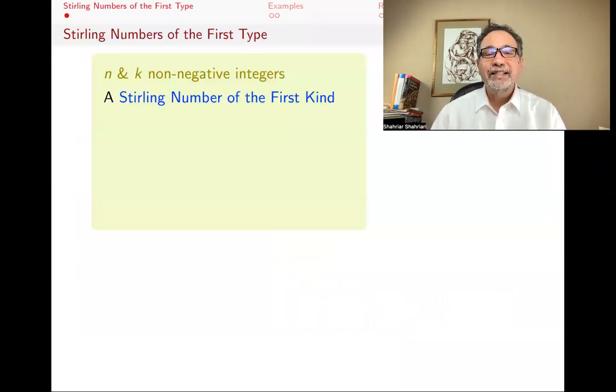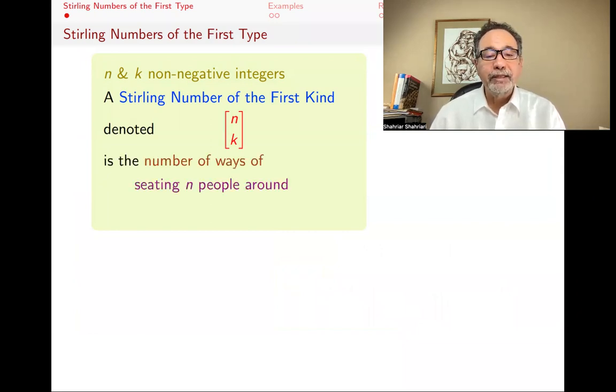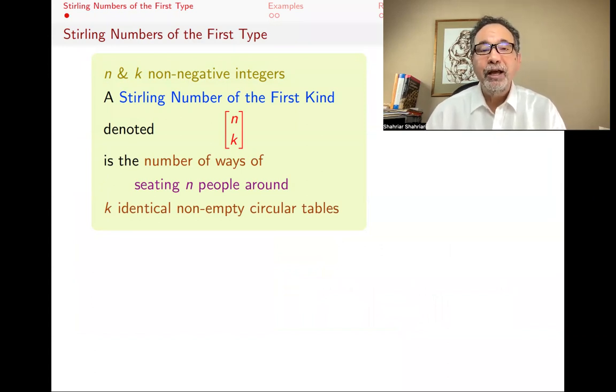n and k are non-negative integers. A Stirling number of the first kind is denoted by two brackets [n,k], we need that n-brac-k, and what it is is the number of ways of seating n people around k identical non-empty circular tables. So if you have n people and you want them to sit around circular tables, but you have k of them, how many ways can you do that? Now, in sitting around a circular table, the actual seats don't matter, only the relative position of where you're sitting matters, like who's to your left, who's to your right, who's across from you, and so forth, but not which specific seats you're sitting at.